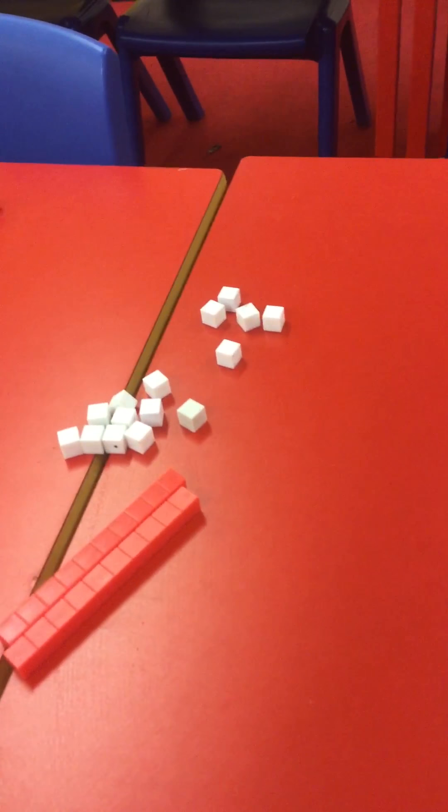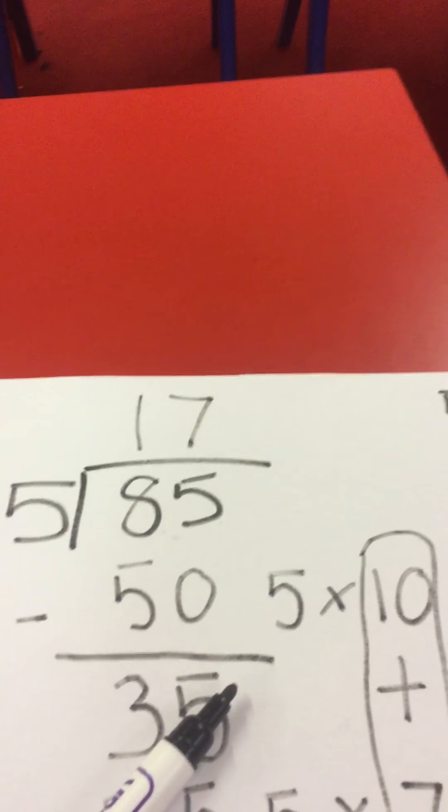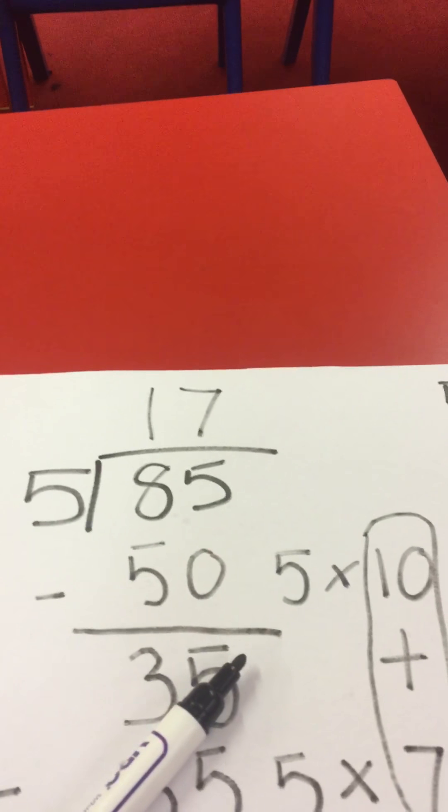This is a good way of checking whether you have got the correct answer. There we go. 5 groups with 10, 11, 12, 13, 14, 15, 16, 17 in each. And that is the answer I got originally.